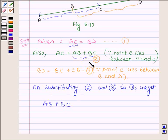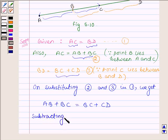And in place of BD we will write BC plus CD. Now subtracting BC from both the sides,